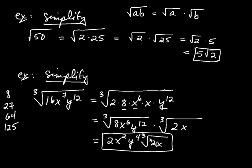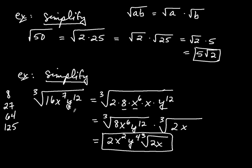That's generally how we use the product rule. Most of the time, the product rule is useful for simplifying a radical by writing the radicands as a product involving perfect squares, perfect cubes, or whatever your index guides you to.